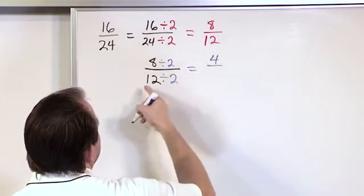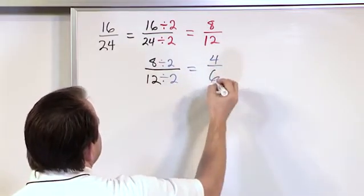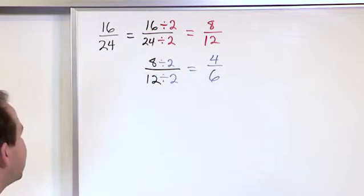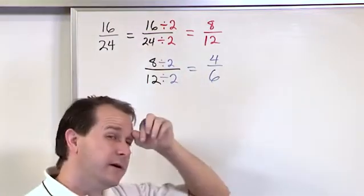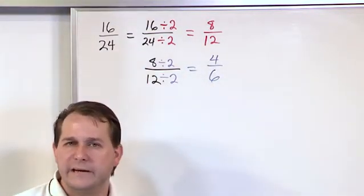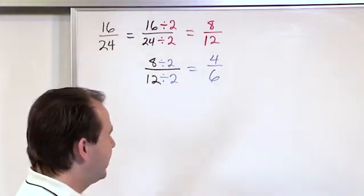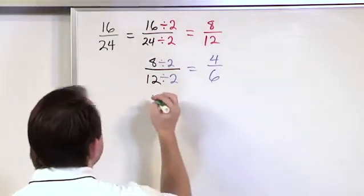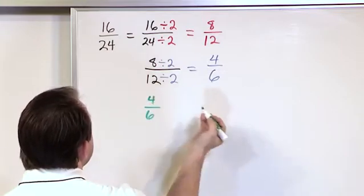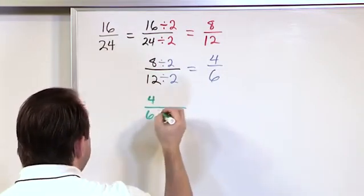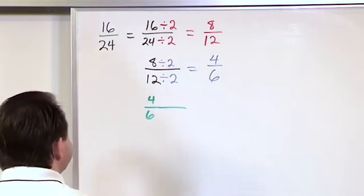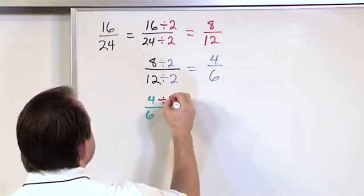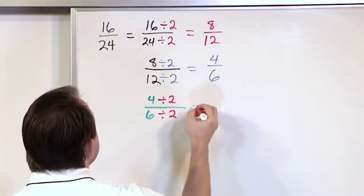And again, I think I'm done, but then I look at this again and I say, wait a minute, 4/6. I can divide by 2 again, and still make this even simpler. So let's do that. Let's do 4/6. And what I want to try to do is divide the top by 2 and the bottom by 2 and what...